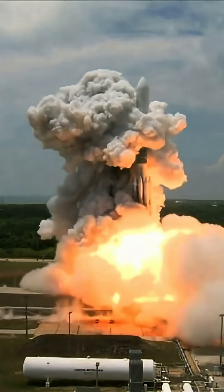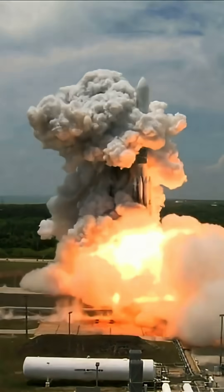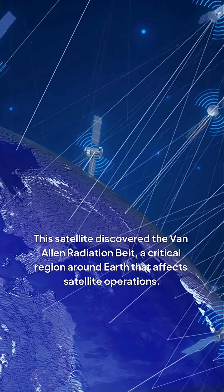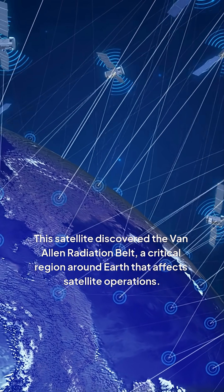The United States faced similar challenges, with several failed attempts before successfully launching its first satellite, Explorer 1, on January 31, 1958. This satellite discovered the Van Allen Radiation Belt, a critical region around Earth that affects satellite operations.